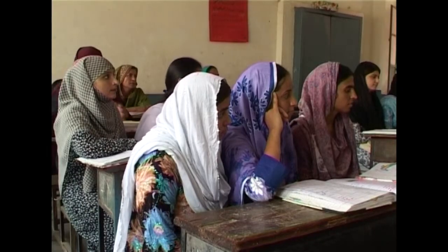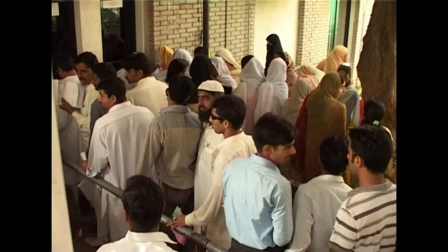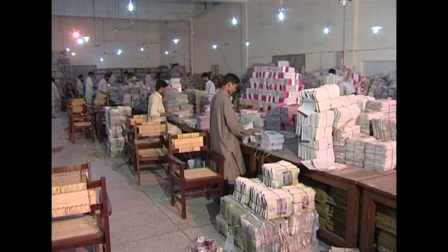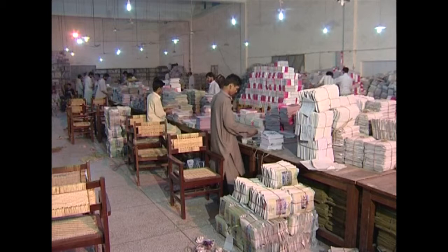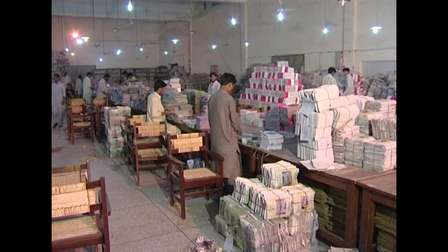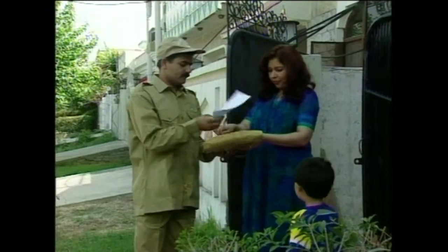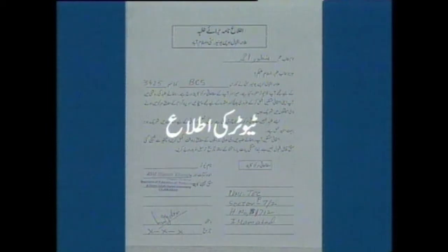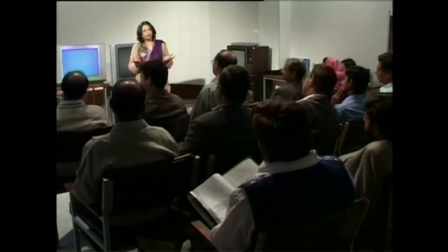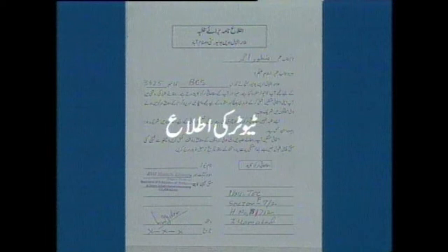فاصلاتی نظام تعلیم میں طالب علم کو داخلہ لینا پڑتا ہے، اس کے بعد یونیورسٹی کتابیں اور مطالعاتی مواد ان کی دہلیز پر پہنچاتی ہے۔ ٹیوٹرز کی جانب سے طالب علموں کو ٹیوٹر لیٹر جاری ہوتا ہے جس کے ذریعے طالب علم کی رسائی ٹیوٹر تک ممکن ہو جاتی ہے۔ ٹیوٹوریل کلاسز منعقد ہوتی ہیں جن کی تفصیل ٹیوٹر لیٹر میں درج ہوتی ہے۔